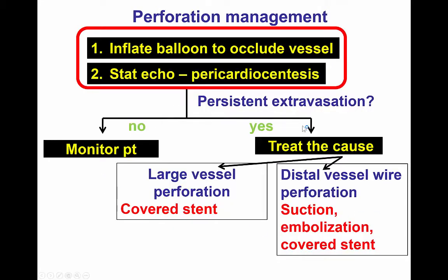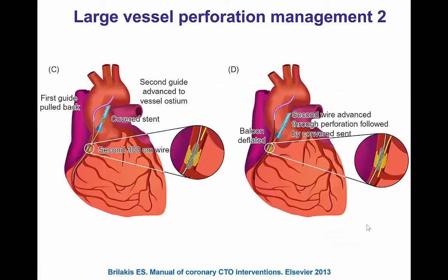The next step depends on the cause. If extravasation continues despite prolonged inflation, then for large vessel perforation the therapy is a covered stent. For distal vessel perforation, suction and embolization or a covered stent are options as well. The way the covered stent is deployed depends on the guide we have. Currently, with the low-profile JoStents, they can be delivered through a single 8-French guide catheter. However, quite often a second guide catheter is used to be able to deliver the covered stent.